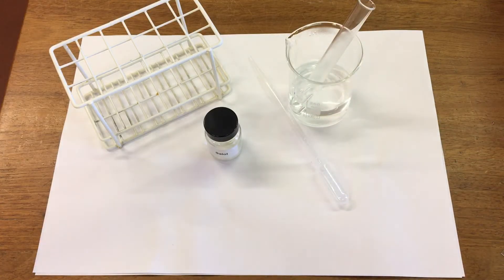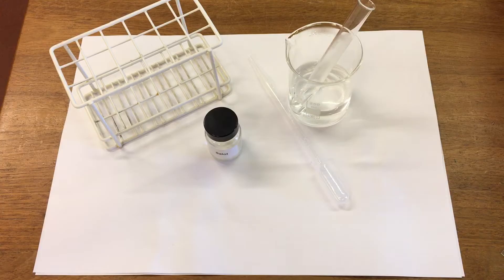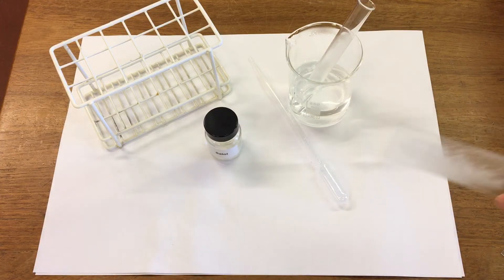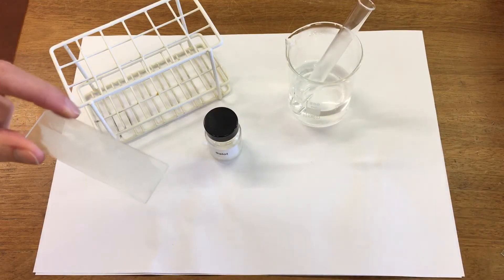We're then going to take some of the liquid salol and pop it on a very cold microscope slide that's just been in the freezer. So there's our cold slide and we'll use our pipette.